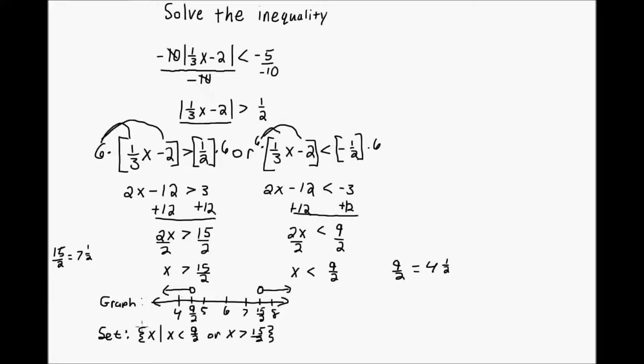Again, we're going to need, we've got the graph and the set builder. And the last thing we need is our verbal solution to this problem. So, I'm just going to put the verbal solution over here. And I just write exactly what I see here in the set builder. It's x is less than 9 over 2, or, and this is important that we use or, x is greater than 15 over 2. And those are our three representations of the solutions.